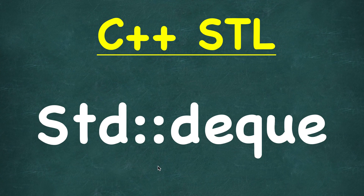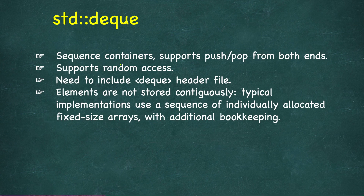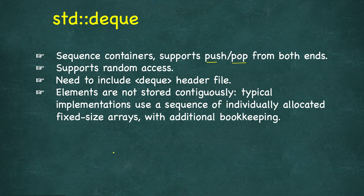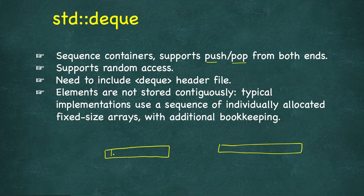Continuing our discussion on C++ STL containers, today we will look at deque. Deque is another sequence container and it supports push and pop operations from both ends. This is not implemented to store elements continuously like vector. A typical implementation would use fixed-size arrays, so we have multiple fixed-size arrays — it's contiguous to some extent but we have many such arrays.